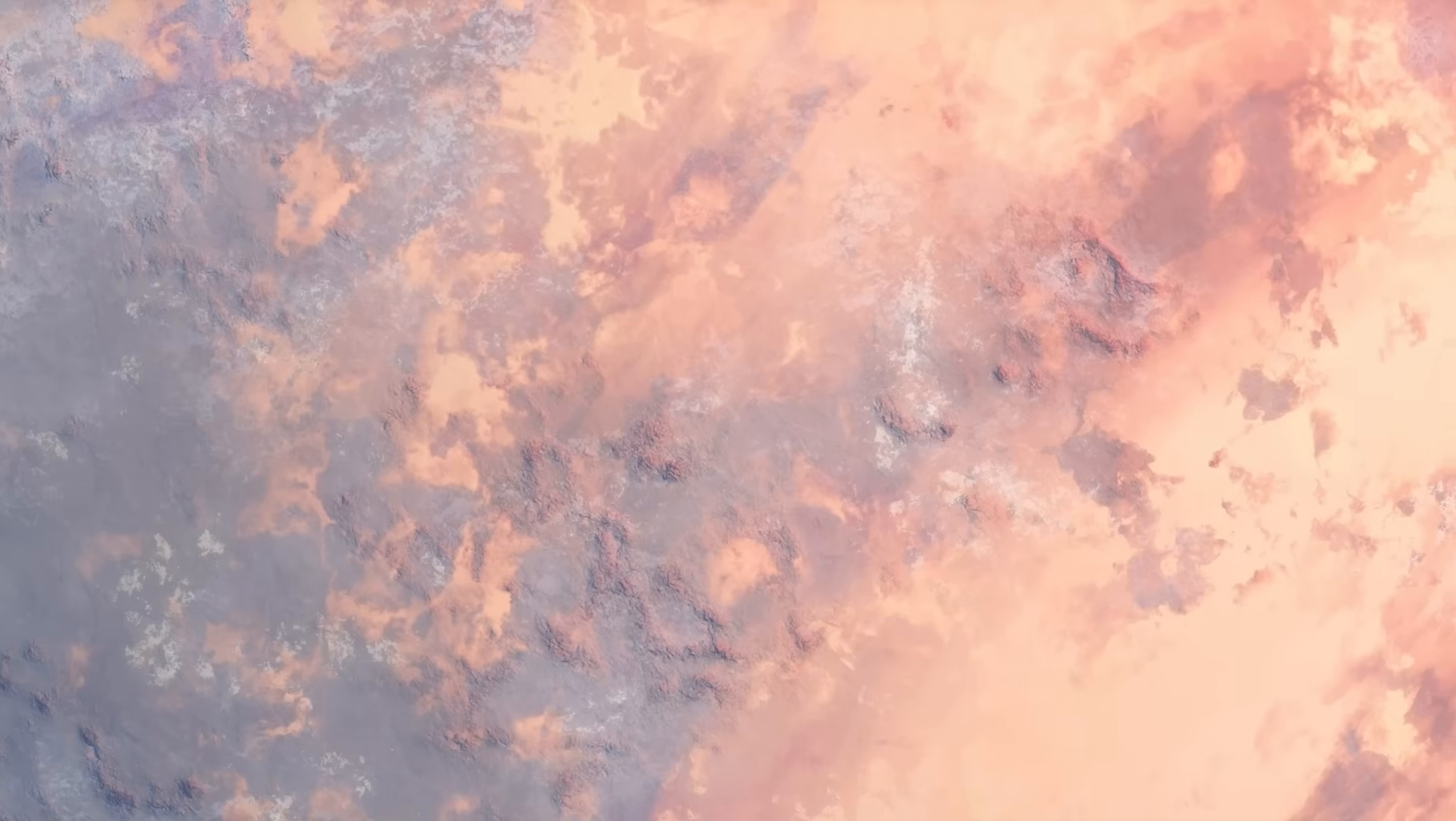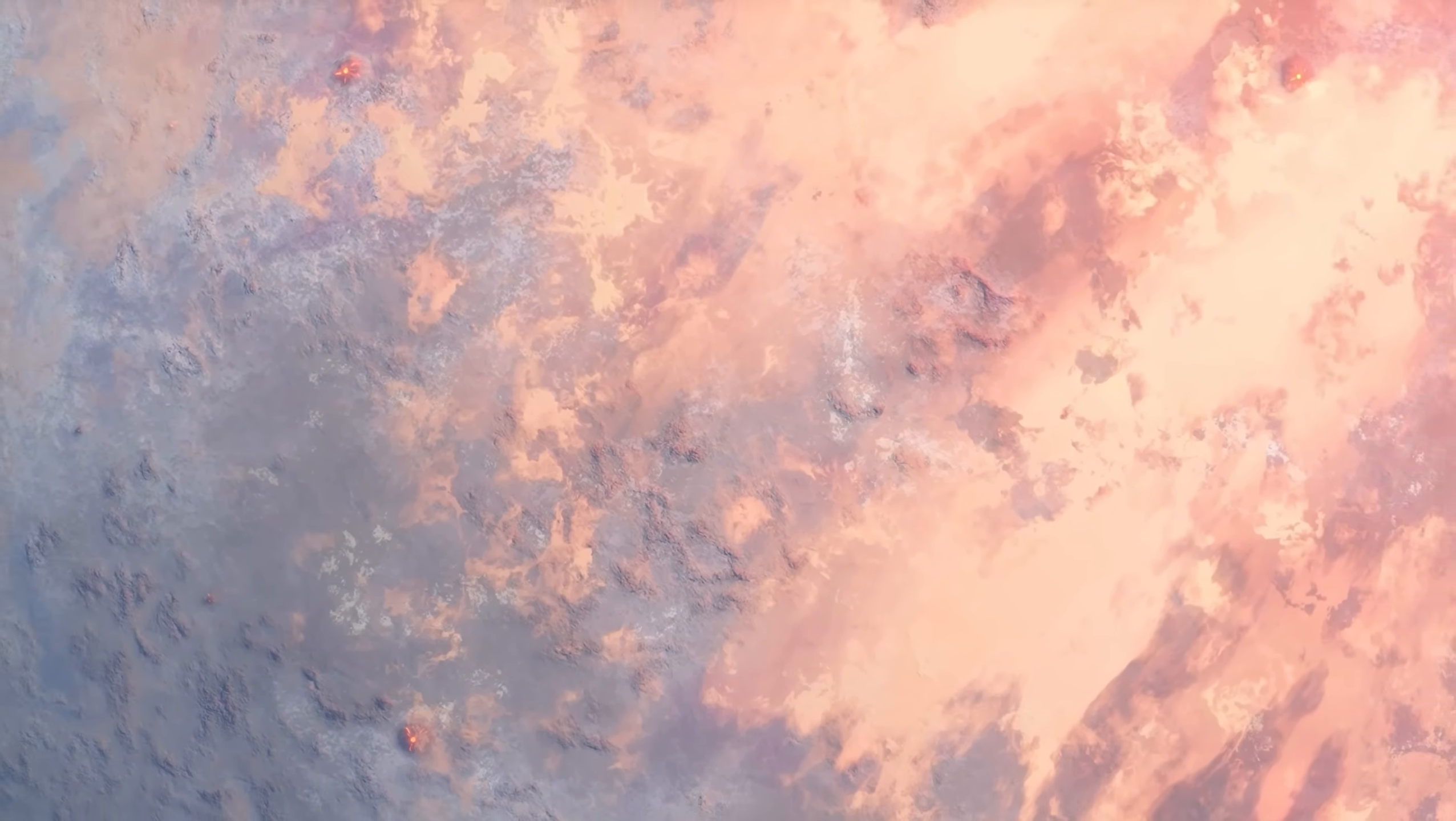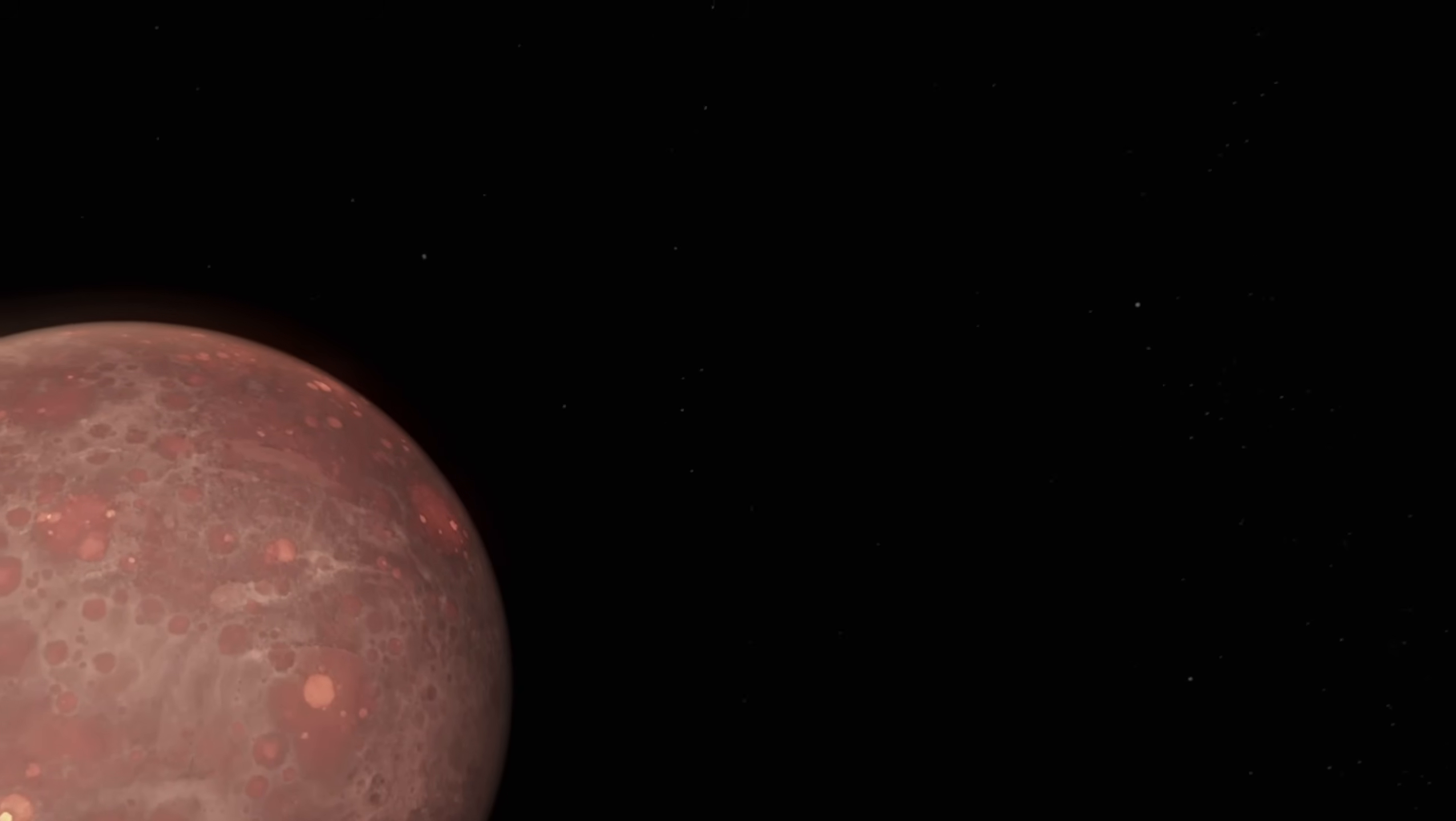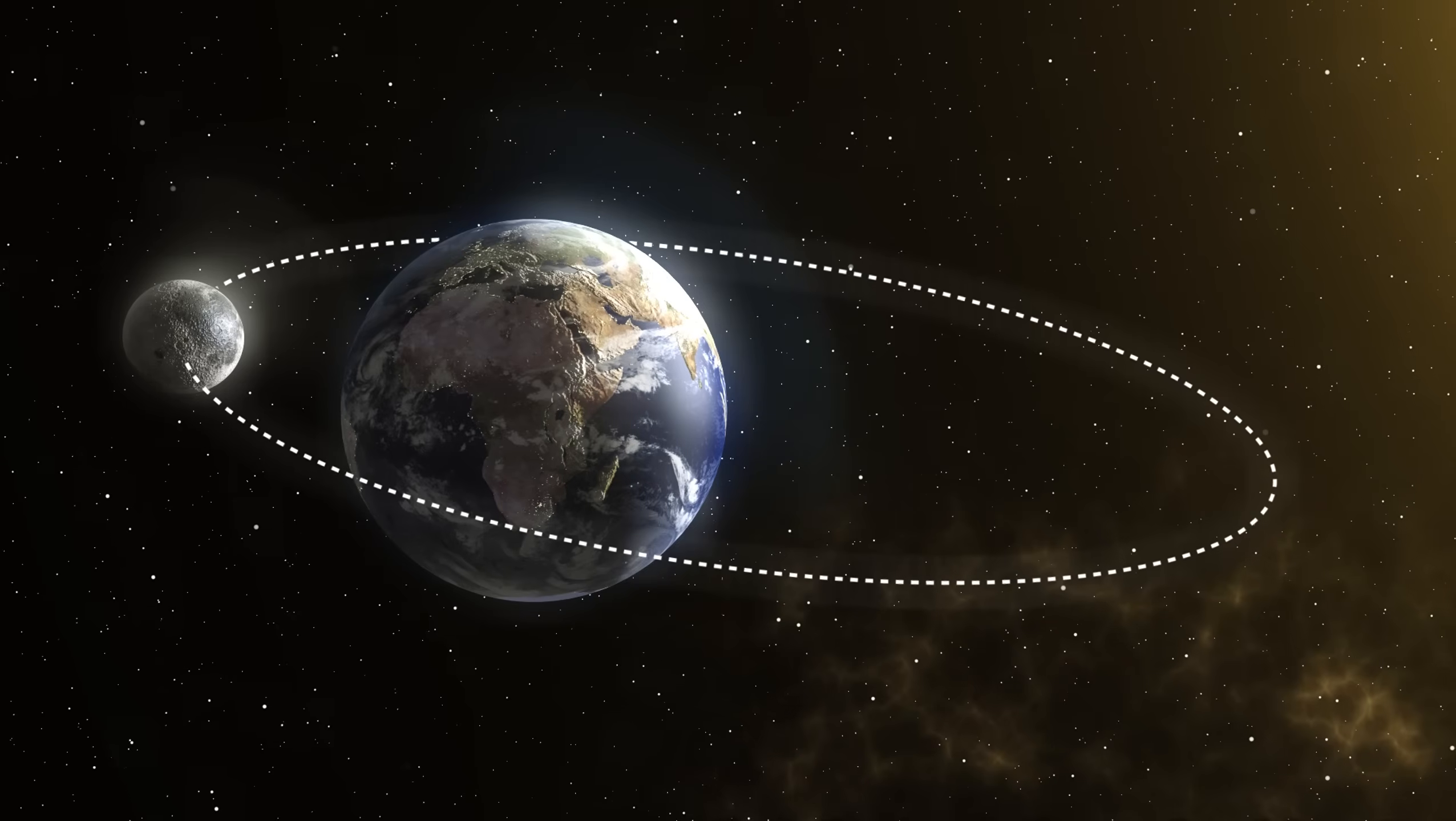Proxima Centauri emits much less light and heat compared to our Sun, which means that this rocky neighbor orbits much closer to its star than Earth does to the Sun. This proximity makes the planet more vulnerable to stellar flares and radiation, which might challenge the survival of any potential life forms. However, if this exoplanet has a magnetic field or a thick atmosphere, it might shield the planet from these harmful effects, giving life a fighting chance.